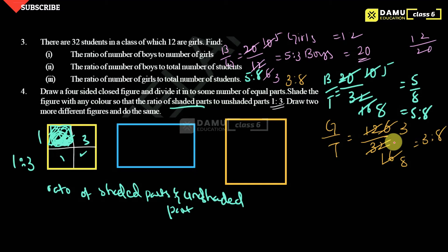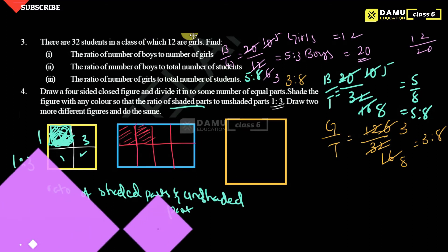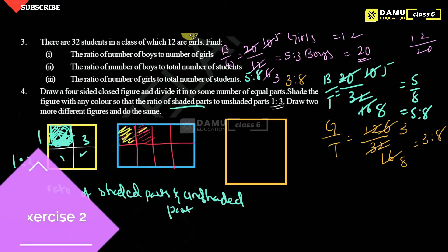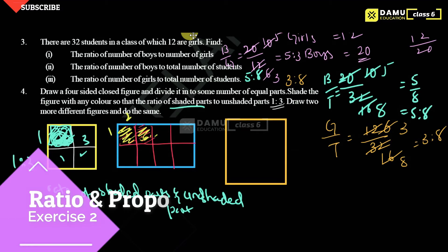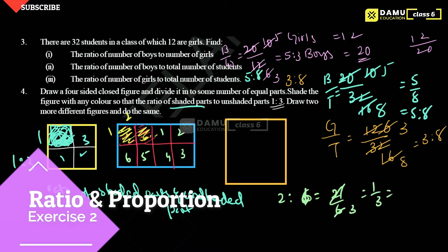Again, divide the figure into 4 parts and shade 2 of them. How many are shaded? 2. How many total divisions? 1, 2, 3, 4, 5, 6. So shaded to unshaded ratio is 2:6. Two ones are 2, two 3s are 6, so that simplifies to 1:3.